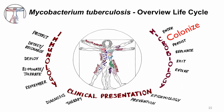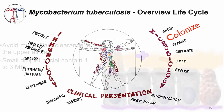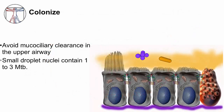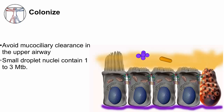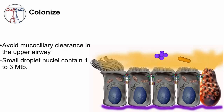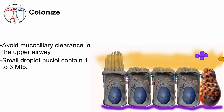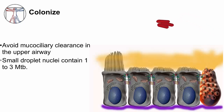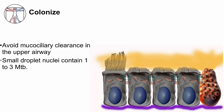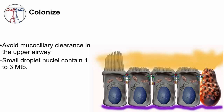The next step is COLONIZE. Mycobacteria do not colonize the upper airway — they have to reach the alveoli. Droplet nuclei can more easily reach the alveoli because of their small size, about one to five microns in diameter. In contrast, the large droplets containing MTB cause less transmission because they don't aerosolize as well, and if inhaled, most are trapped in the upper airway. Each of the small droplet nuclei that reach the alveoli contain around one to three Mycobacterium tuberculosis bacilli.